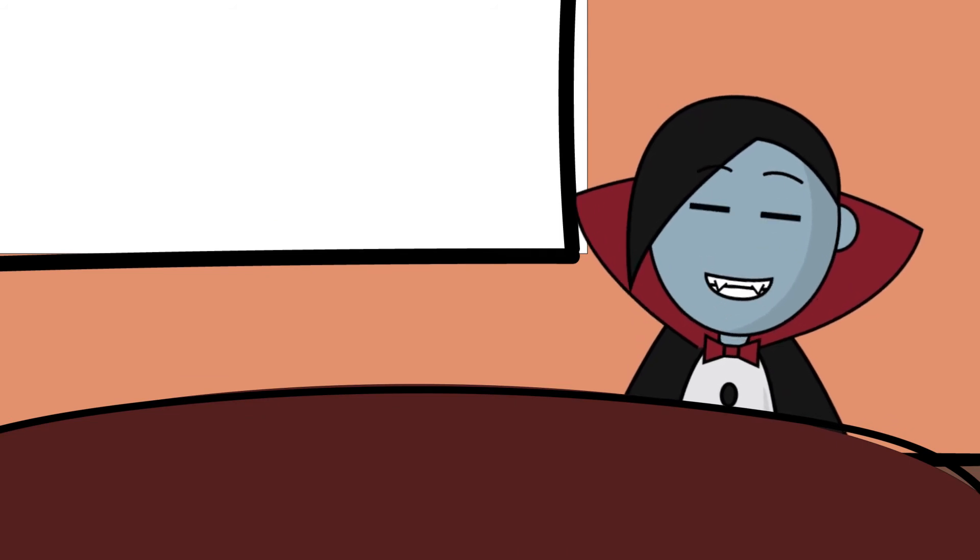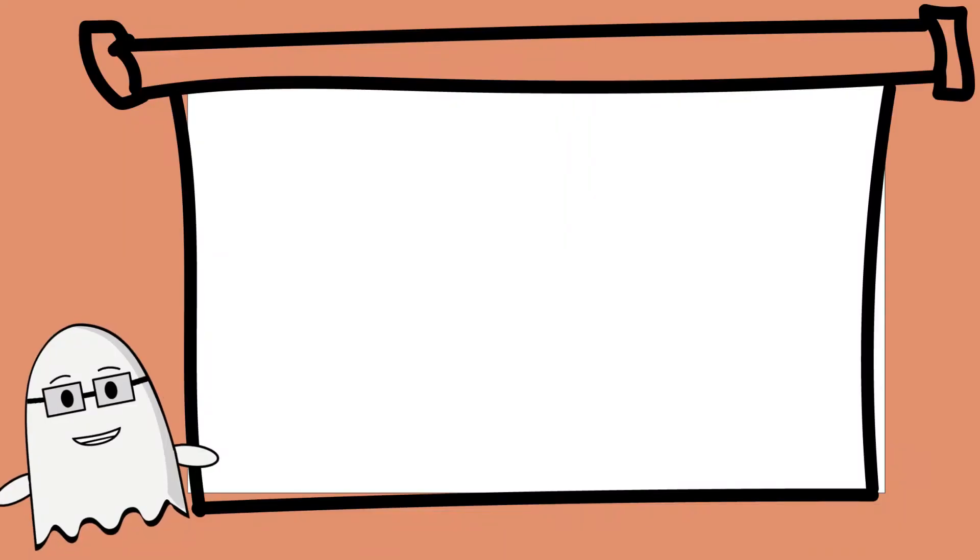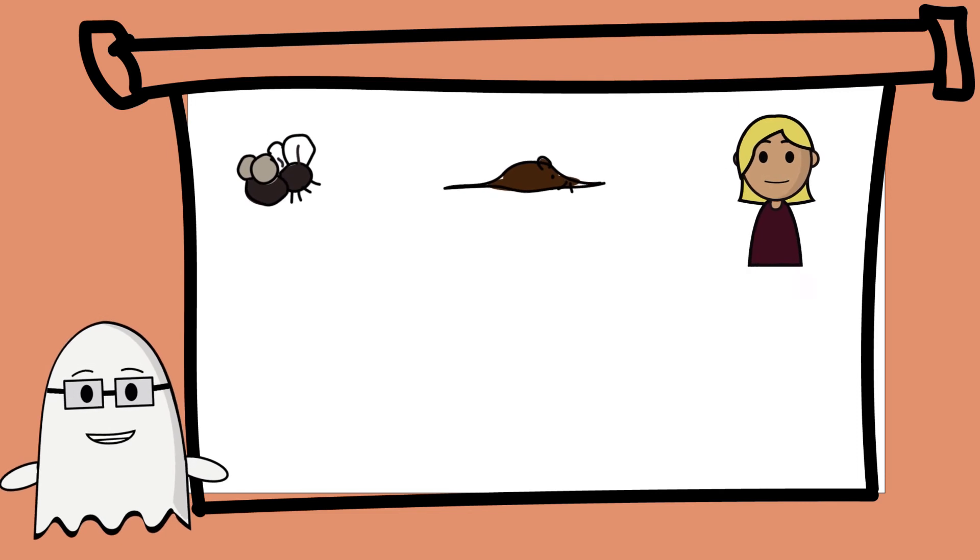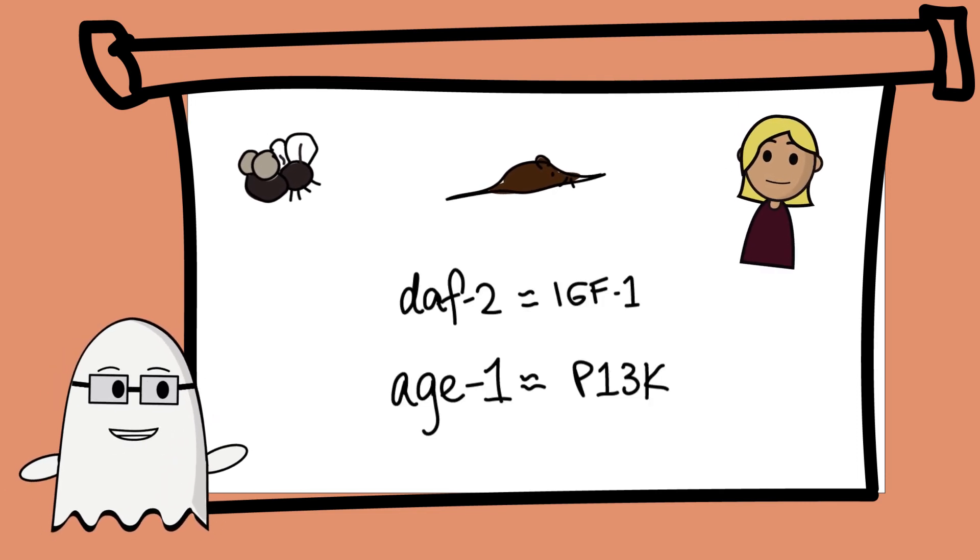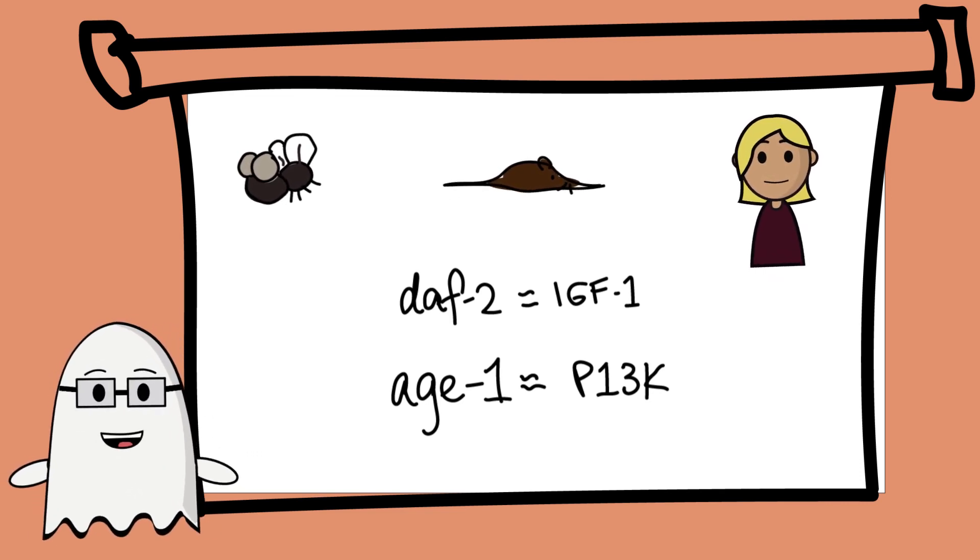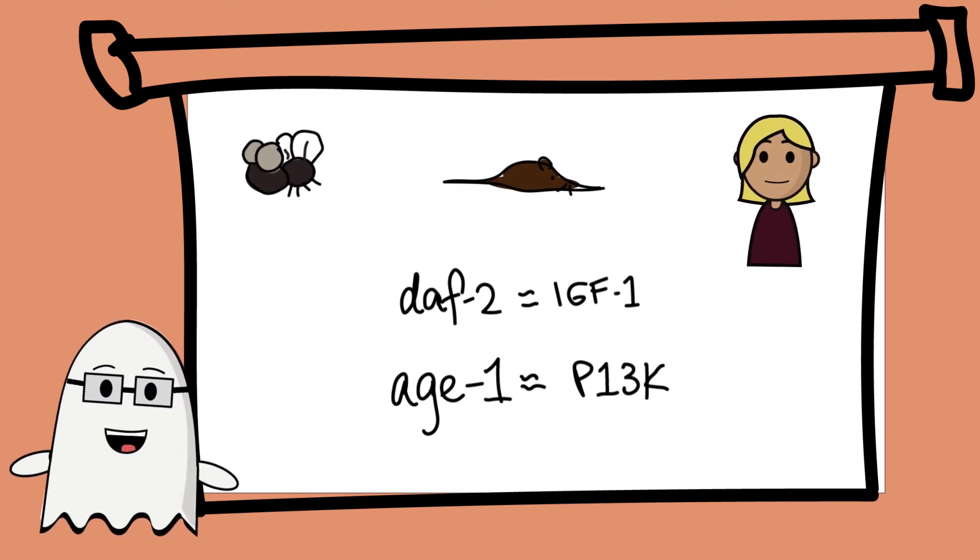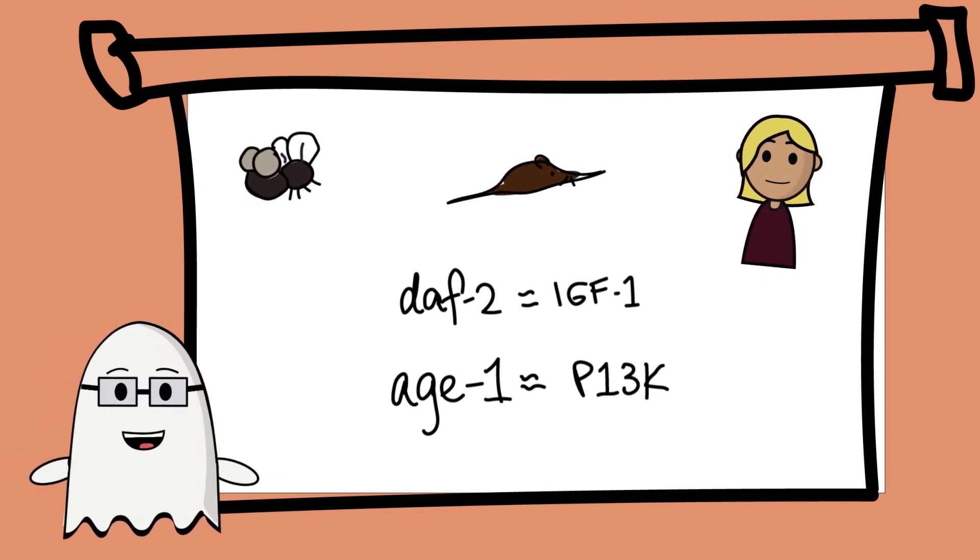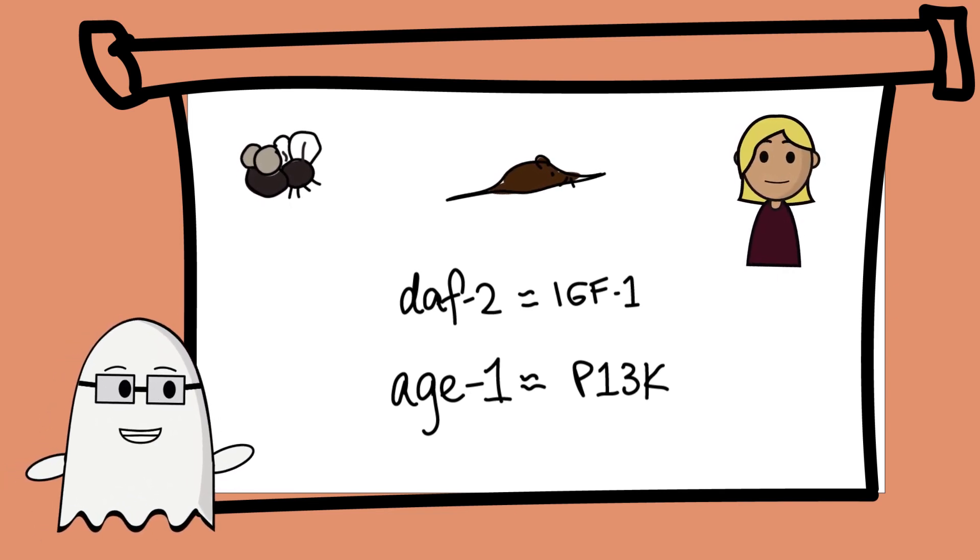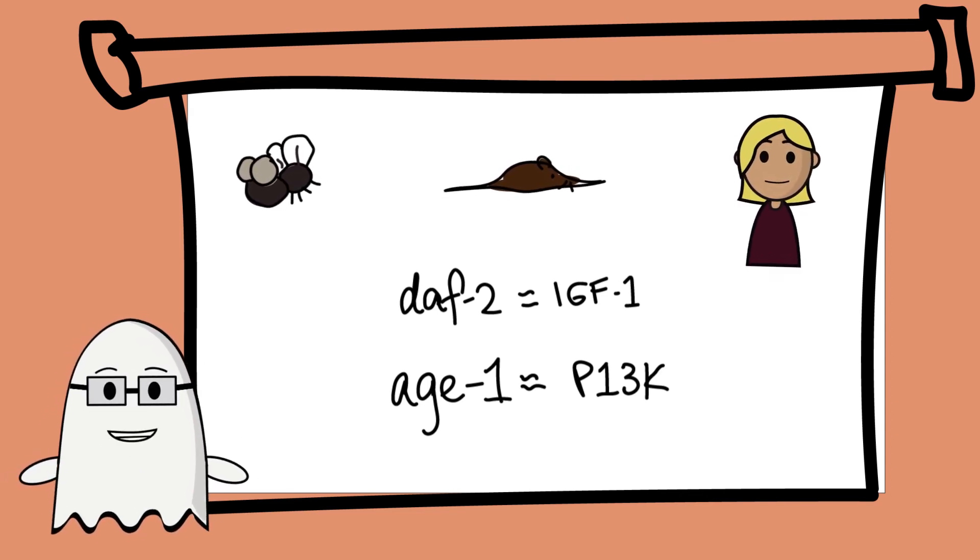Okay, so those genes help extend lifespan in C. elegans. What about other animals? Well, subsequent studies found that fruit flies, mice, and even humans have orthologs to both DAPH2 and Age-1, namely, insulin-like growth factor and phosphoinositide 3 kinase. This provided evidence of aging being controlled by a hormonal pathway, which makes sense given the various hormonal changes that occur from adolescence to adulthood. Furthermore, the results from these studies have been used for research into treatments against progressive diseases like cancer, specifically targeting the IGF-1 and PI3K pathways.